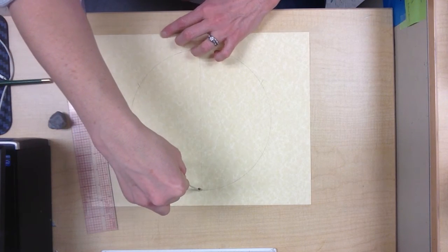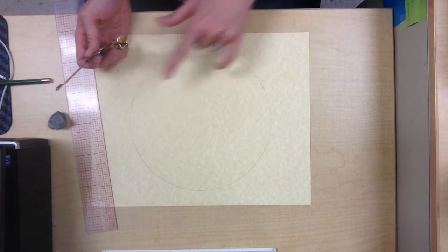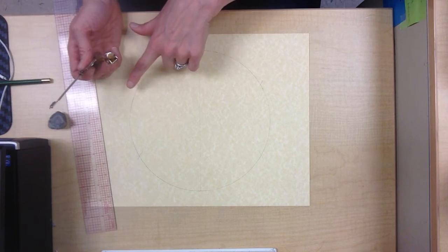And that's the 2 o'clock line. Okay, so now we have 12 o'clock, 6 o'clock, 10 o'clock, 2 o'clock, 8 o'clock, and 4 o'clock.